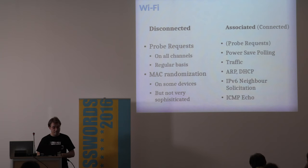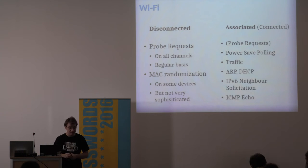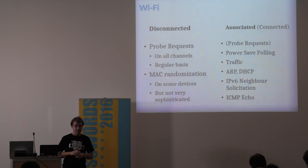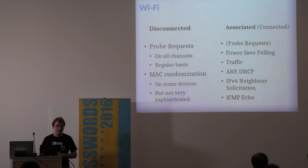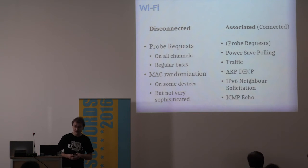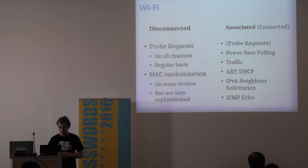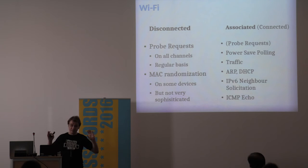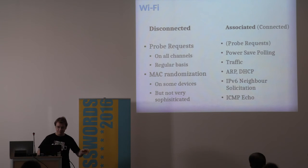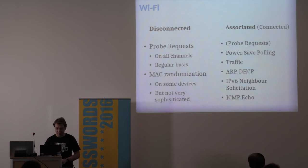Most mobile phone manufacturers choose another way: probe requests. A phone cycles through all the channels and sends a probe request on each channel, and all the access points answer. This works much faster than scanning each Wi-Fi channel, because beacon frames are usually only sent 10 times per second — multiplied by all the channels and interference, passive scanning can take quite a long time.